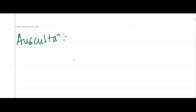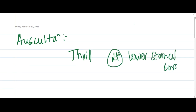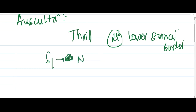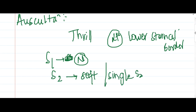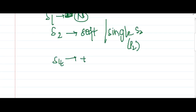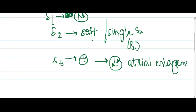On auscultation, there is presence of a thrill at the left lower sternal border. S1 is heard normally. S2 will be heard either soft or as a single S2 — only P2 is heard and A2 may not be heard at all. S4 is present, mainly due to left atrial enlargement.